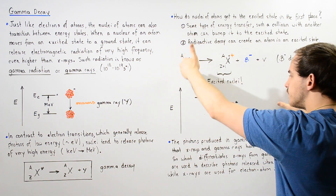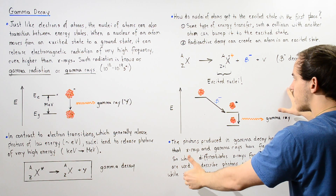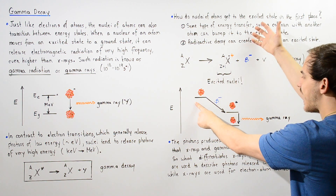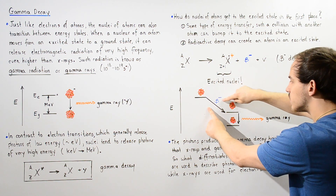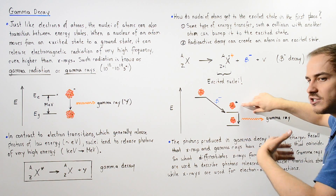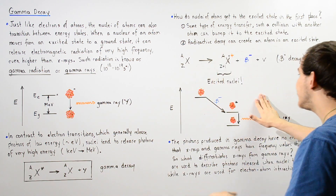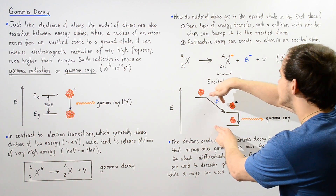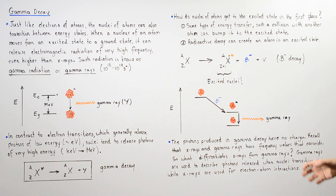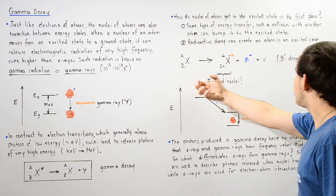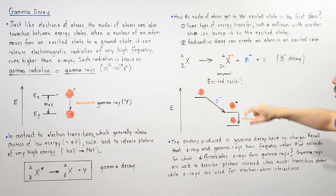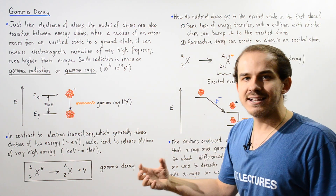We can see what's taking place by looking at the following energy diagram. We begin with an atom that undergoes a beta decay reaction, releasing the beta negative particle and forming a new atom that is lower in energy. But this atom is usually in its excited state, and it can further decrease in energy by transitioning to the ground state, which generally releases gamma radiation. So following beta decay, a gamma decay can take place assuming the atom formed is in its excited state.